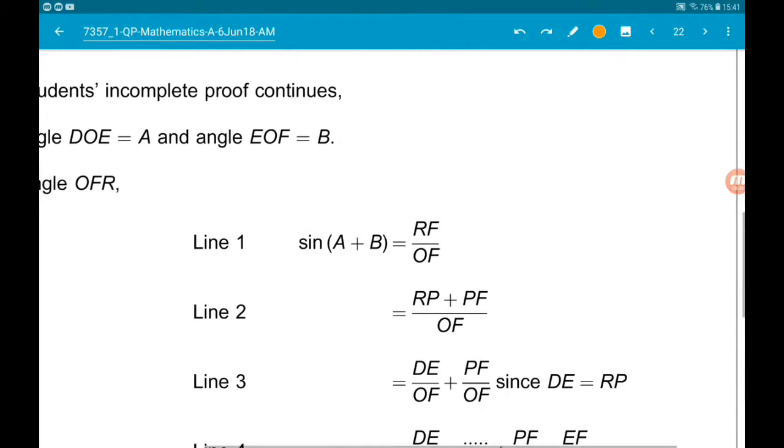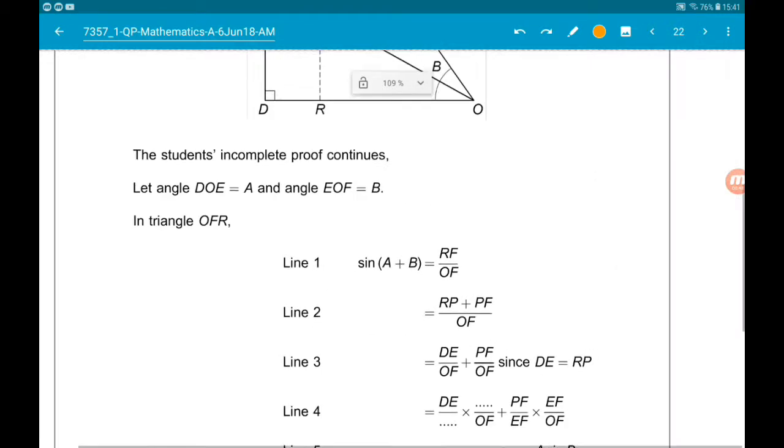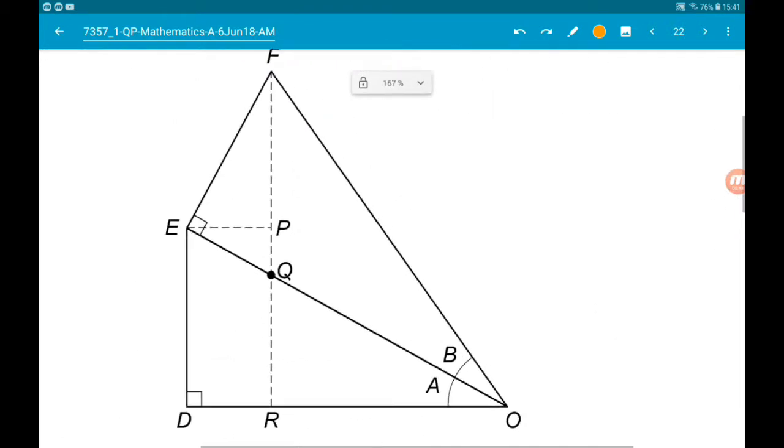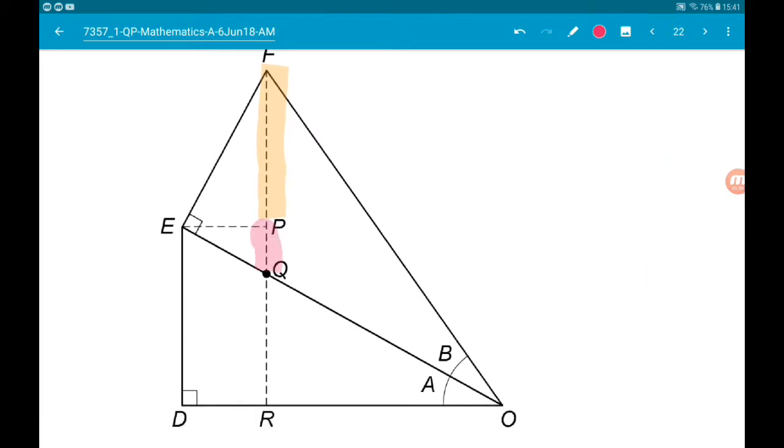Okay, line 2. So what they've done here is split RF into RP plus PF. So let's have a look at how they've done that. So they've split that vertical length into these two pieces. So that's absolutely cool.